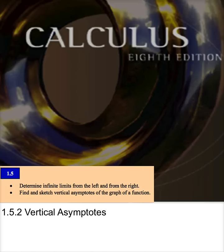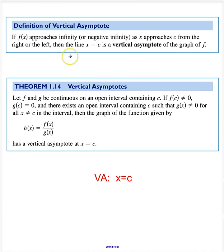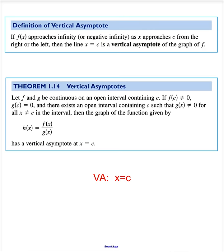Now let's talk about vertical asymptotes. The definition of a vertical asymptote is that f of x approaches infinity, either positive or negative infinity, it doesn't matter which, whenever x approaches c from the right or the left. And we say that this line, x equals c, is a vertical asymptote.